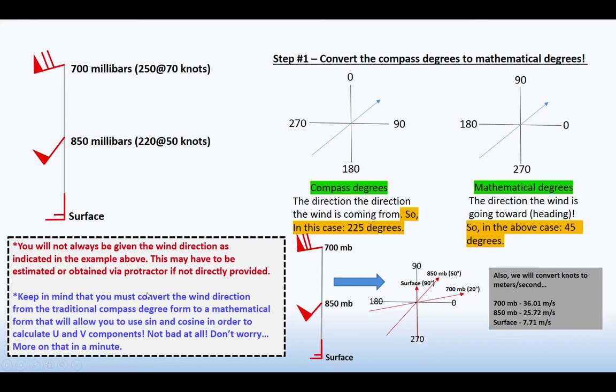You must convert the wind direction from traditional compass degrees to a mathematical form that will allow you to use sine and cosine in order to calculate the U and V components. This is not bad at all, so don't worry. We'll go over that more in just a sec.